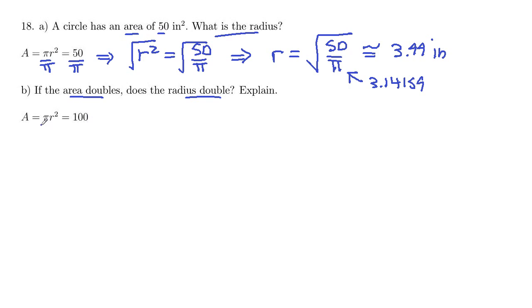Just solve this for r again. So divide by pi on both sides. We get r squared is 100 over pi.